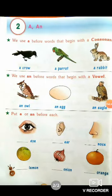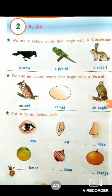We use A before words that begin with a consonant. You can see there are pictures of animals and birds. The first one is crow. Crow starts from a consonant, so we put A: a crow. A parrot, a rabbit. We use AN before words that begin with a vowel. You can see there are pictures of owl, egg, and eagle. Owl starts from a vowel, so we put AN: an owl, an egg, an eagle.